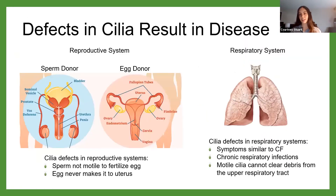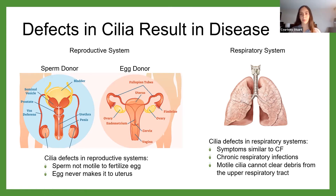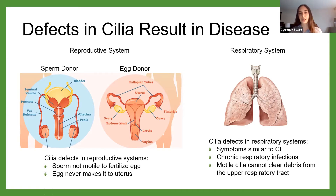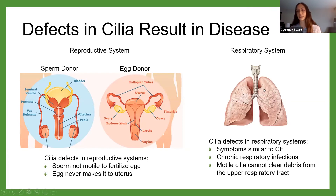Understandably, defects in the cilia are going to cause some really serious issues. Looking more specifically at the reproductive system and the sperm donor, if the sperm donor has defects in the cilia, that sperm is not going to be motile enough to fertilize the egg. You're not ever going to get fertilization there. Conversely, in the egg donor, if you have defects in the cilia in the fallopian tubes, that egg is never going to make it to the uterus. So you have this infertility issue that many people struggle with today, and that's partially because of cilia.